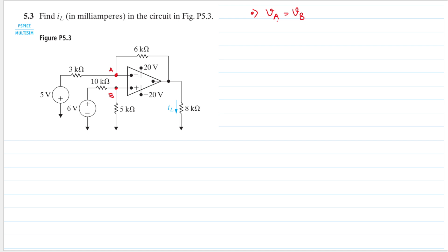Now let's label the voltages. This is 5 volts from ground, but the sign is negative, so we have minus 5 here. This is 6 volts from ground, so we have positive 6 here. Let's assume the direction of the current: this is going to the right, this is going to the right, and this is going down. Let's name this node here as v0.